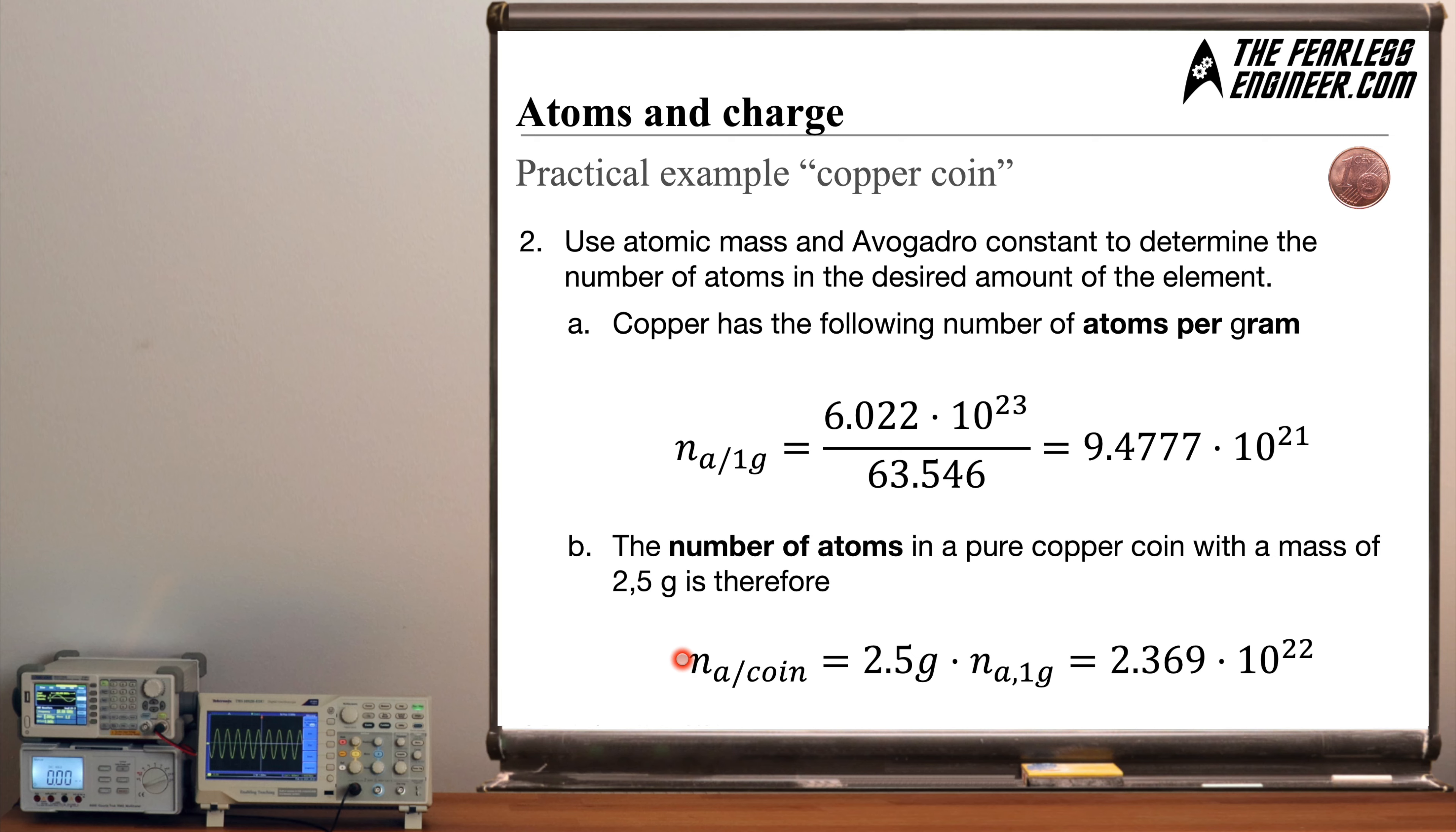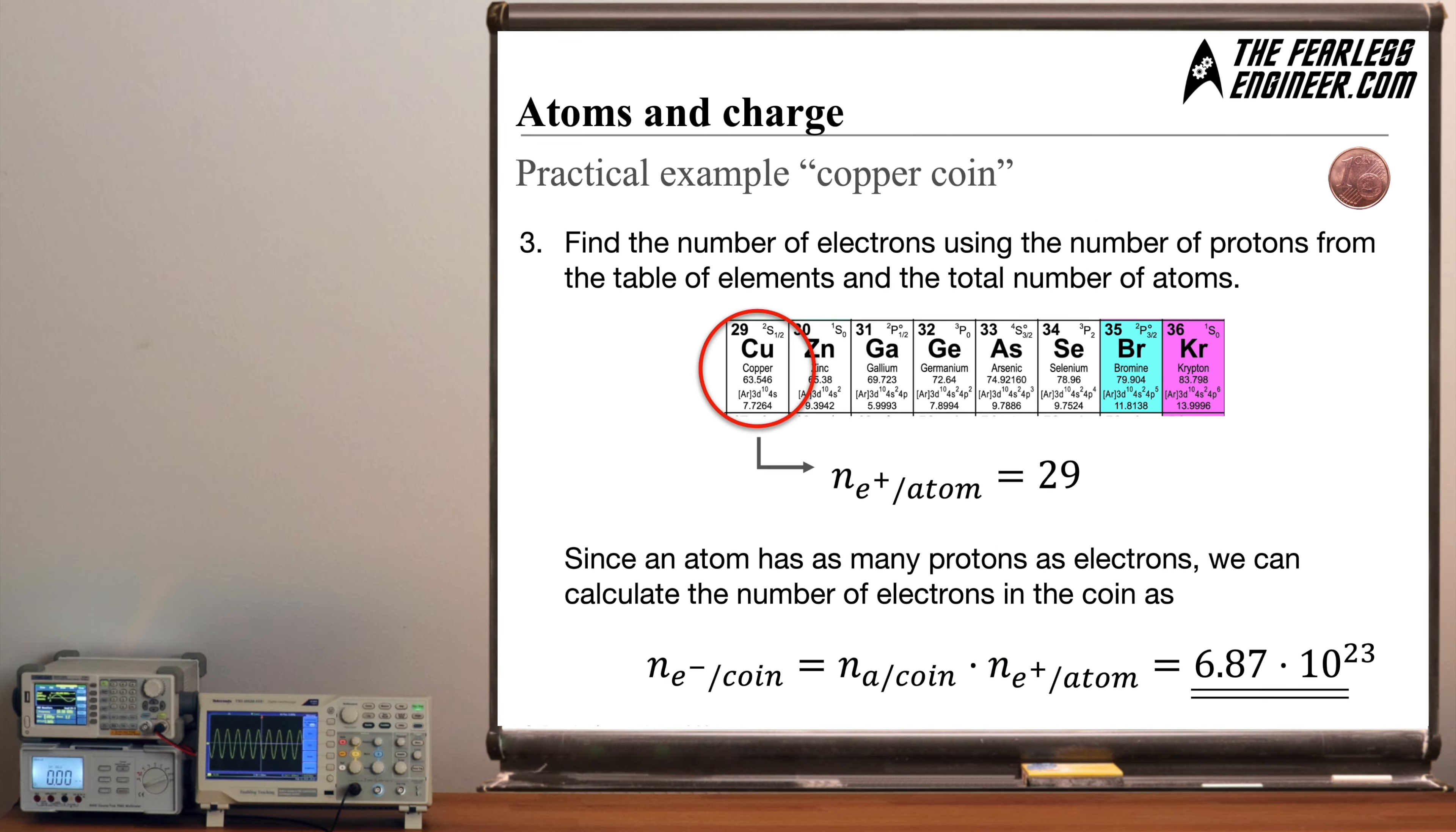And in step B what we can do now is since we know the number of copper atoms in one gram we can easily transfer this result to 2.5 grams of copper which is the mass of our coin. So the number of copper atoms within our coin which weighs 2.5 grams is 2.369 times 10 to the power of 22.